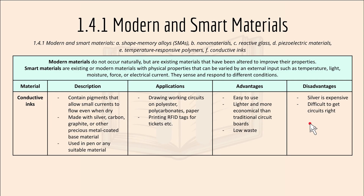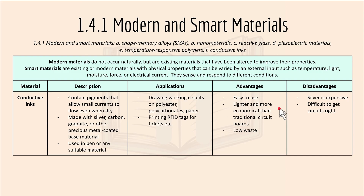Conductive inks contain pigment that allows a small current to flow even when dry. They are made with silver, carbon, graphite or other precious metal coated base materials and can be used in pens or any suitable material. Applications include drawing working circuits on polyester, polycarbonate or paper. An advantage is that they are easy to use, lighter and more economical than traditional circuit boards, and produce low waste. A disadvantage is that silver is expensive and it is difficult to get the circuits right.